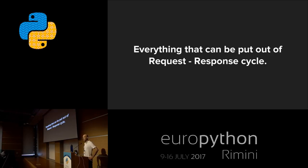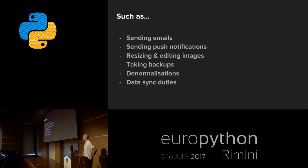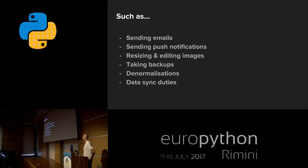Generally, you can put everything that can be moved out of the request-response cycle into Celery. What can these be? Anything heavy. For example, sending emails — sending an email can take up to three seconds or more. Or sending push notifications — imagine you need to send 100 push notifications to different people as a result of one action. Resizing and editing images is always a pain, especially with high-resolution images and third-party storage solutions like S3, and they are the most common reason for 502 errors. And there are tasks that take time, like taking backups, denormalization, and data sync issues with third-party integrations.